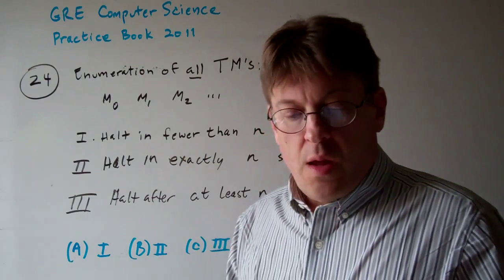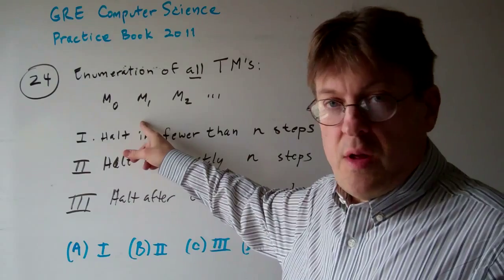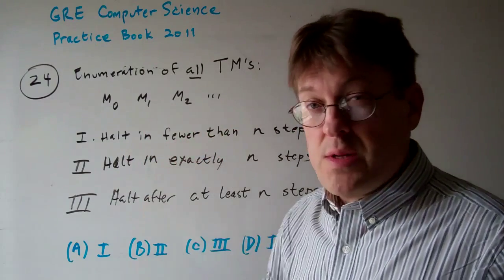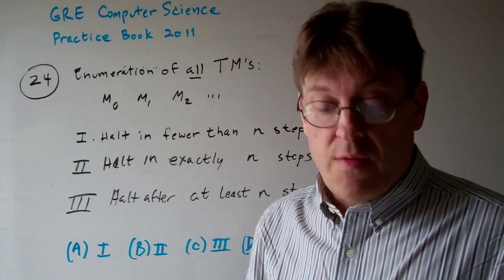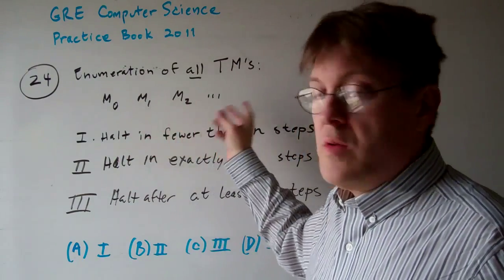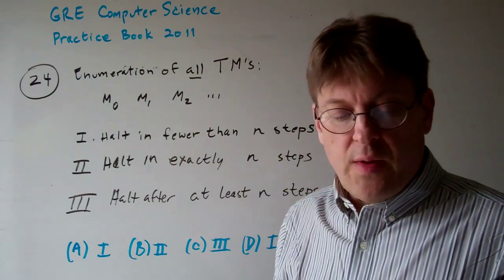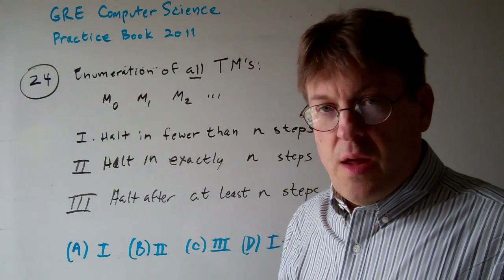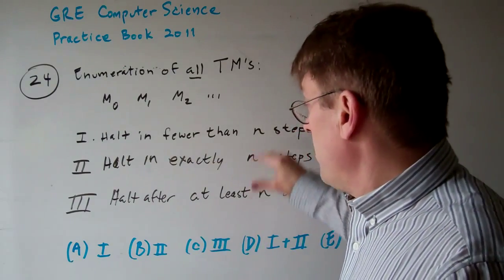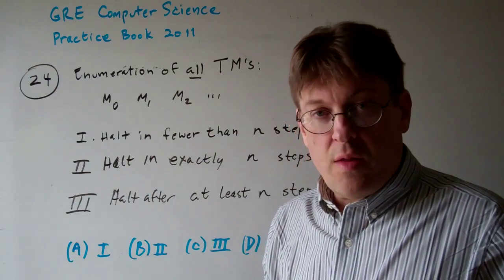Question 24. Suppose we have an enumeration of a whole bunch of Turing machines. As a matter of fact, an enumeration of all of them: M0, M1, M2, where 0, 1, 2 and so forth are natural numbers. Which of the following problems are decidable? Decidable meaning we can determine an answer one way or the other.